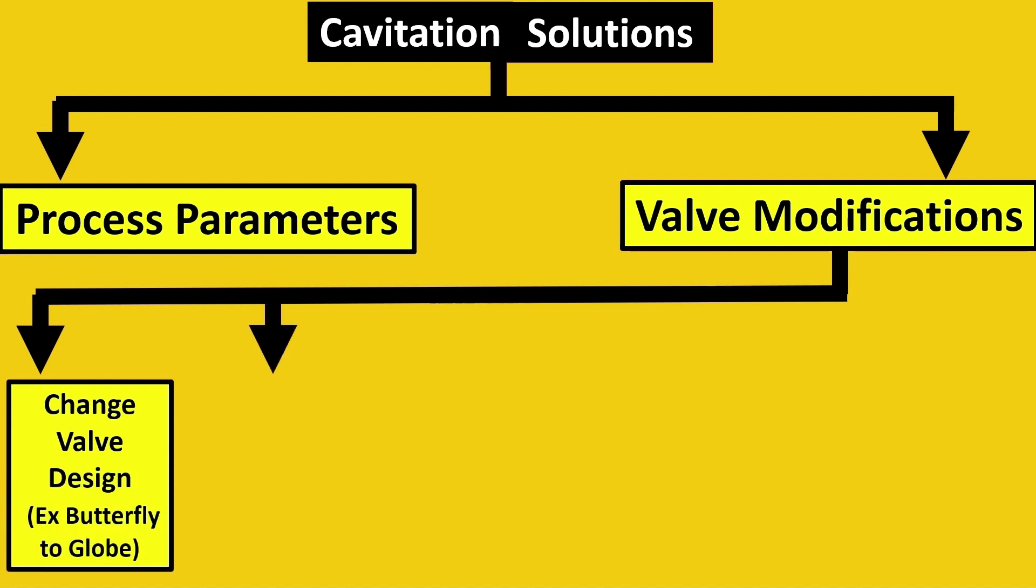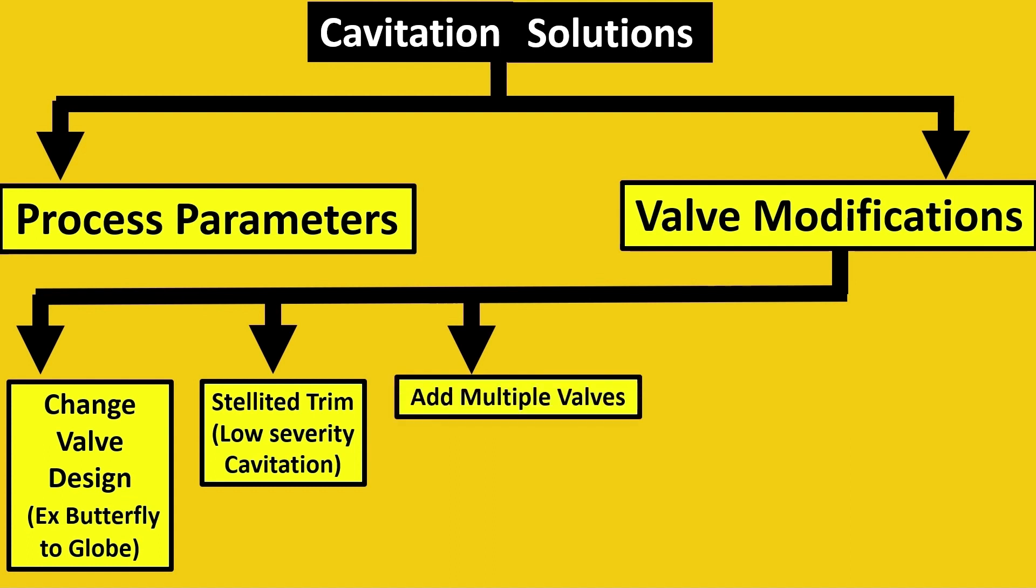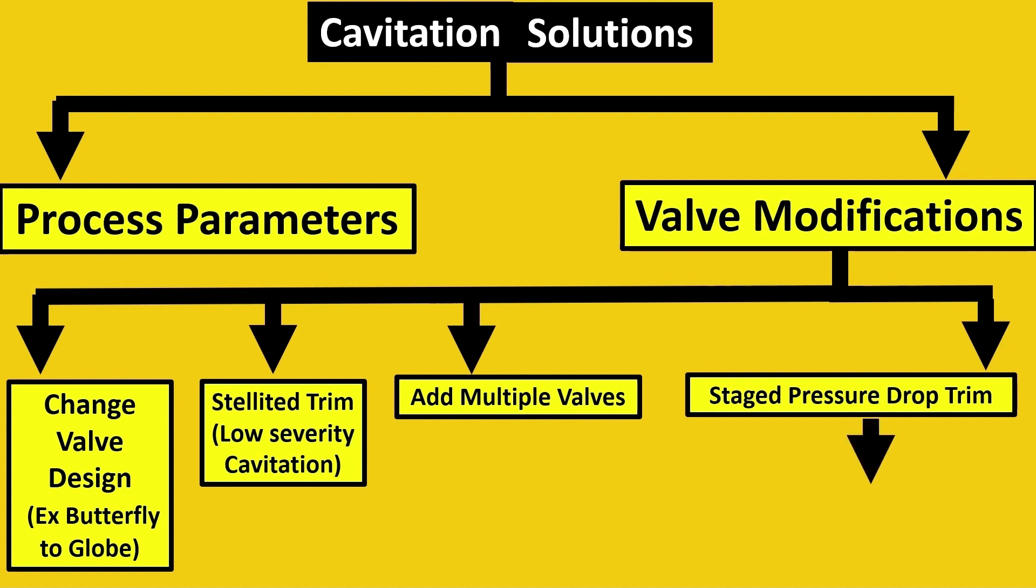The second thing is stellited trim, because stellited trim is basically where you just harden the trim material if the cavitation is not that severe, so it can sustain the damage of cavitation for a long period of time. If that's not working, then you go for multiple valves. But if multiple valves is an issue with you, you can go for stage pressure drop trim, which can further be divided into single stage and multi-stage trim.